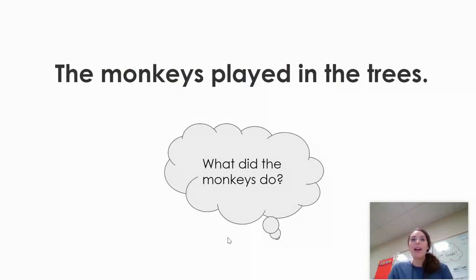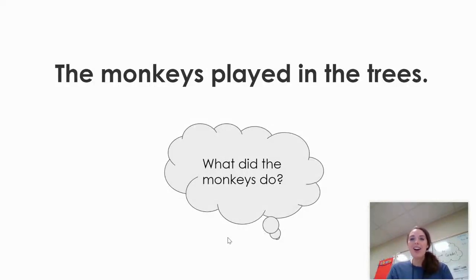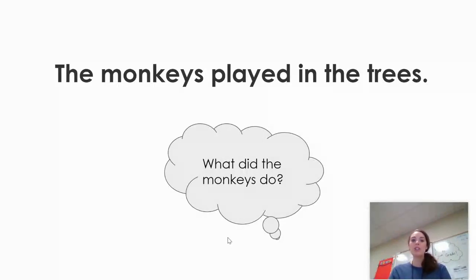Here's our next sentence: The monkeys played in the trees. Well, the subject of the sentence is the monkeys. That's the who we are talking about. What are the monkeys doing? What did the monkeys do? The monkeys played in the trees. They played in the trees — that is what the subject is doing. So what the subject is doing is the predicate. They played in the trees.